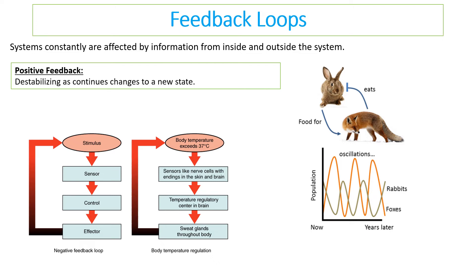Positive feedback can cause destabilization. Instead of reversing a change, it continues and amplifies the change. For example, if your body gets too cold, enzymes stop working, reactions slow down even further, cooling the body even more — a dangerous position.